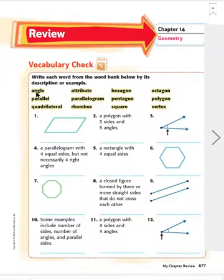So we're going to start with vocabulary. We're going to read the words going across together. Angle, attribute, hexagon, octagon, parallel, parallelogram, pentagon, polygon, quadrilateral, rhombus, square, and vertex.